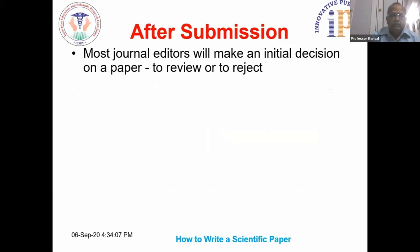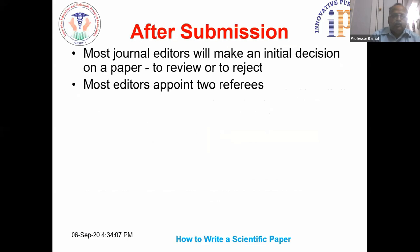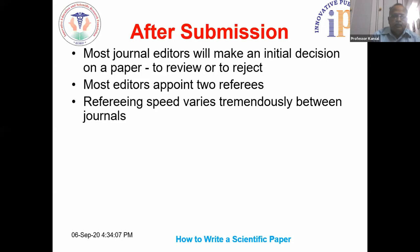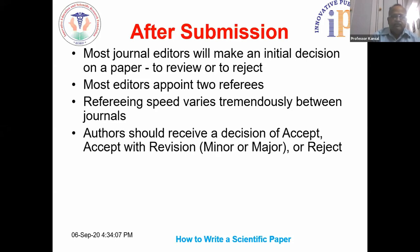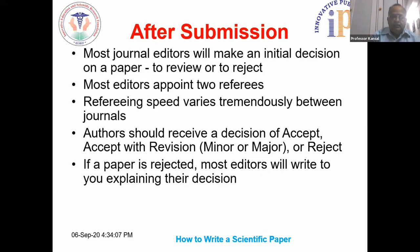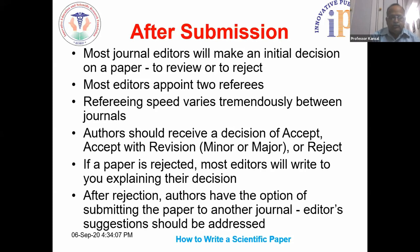After you submit your article, most journal editors will make an initial decision on whether the paper is to be reviewed or rejected. Most editors appoint two referees. Referring speed varies tremendously between journals. Authors should receive a decision in the form of accept, accept with revision — which can be minor or major — or reject. If a paper is rejected, most editors will write explaining the reason. Authors then have the option of submitting the paper to another journal, and the editors' suggestions should be addressed.